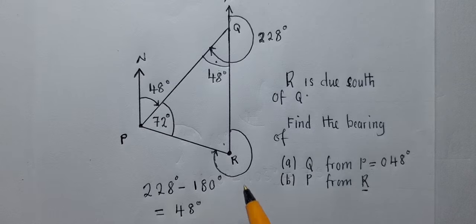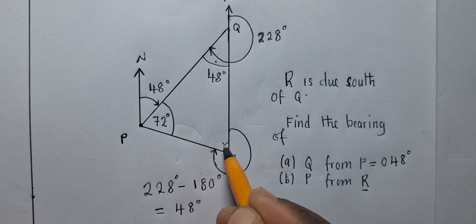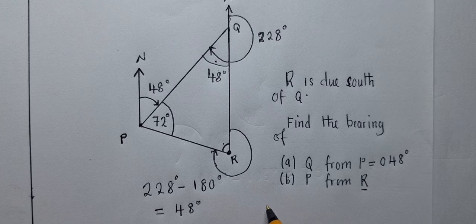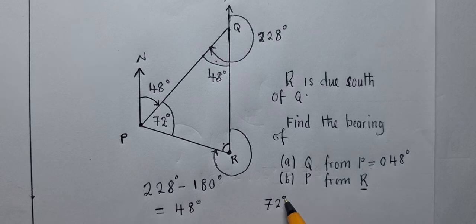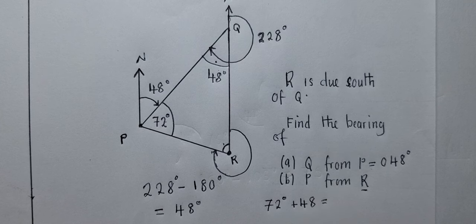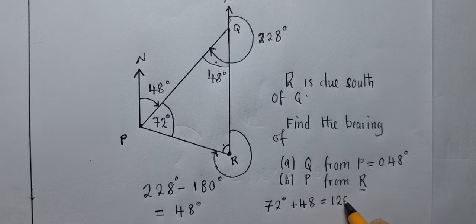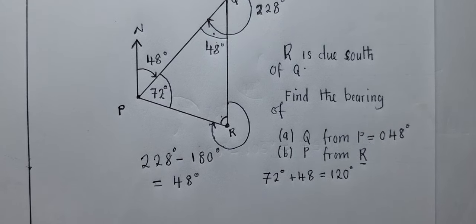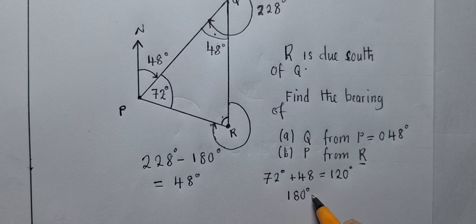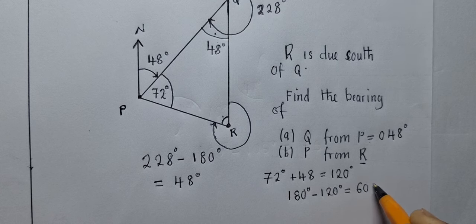So you can see there's an angle here, an angle here. So for us to find this angle right here, we need to use property of a triangle. We shall say 72 degrees plus 48 degrees. What are we getting? We're getting 120 degrees. So now this 120, we shall subtract it from 180. So 180 minus 120 degrees. This will give us 60 degrees.